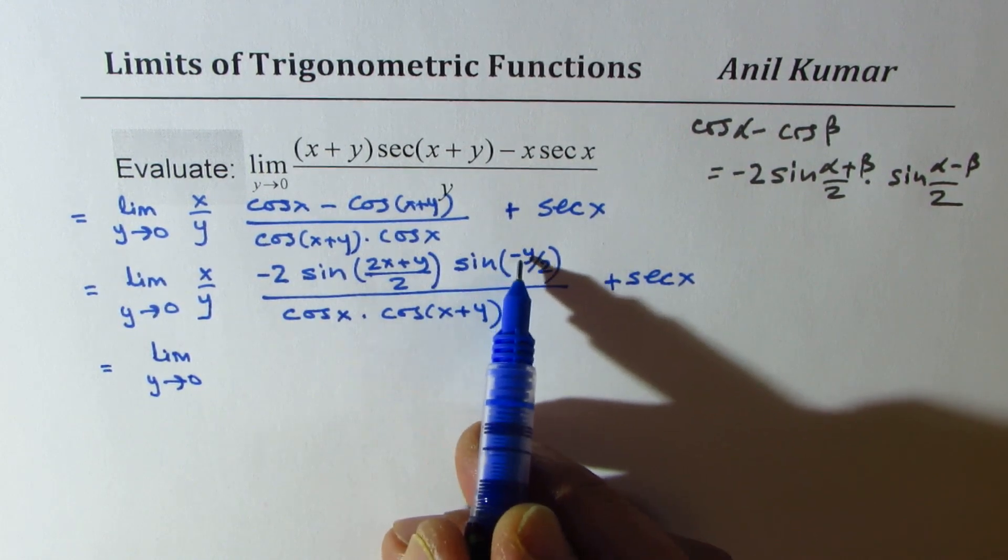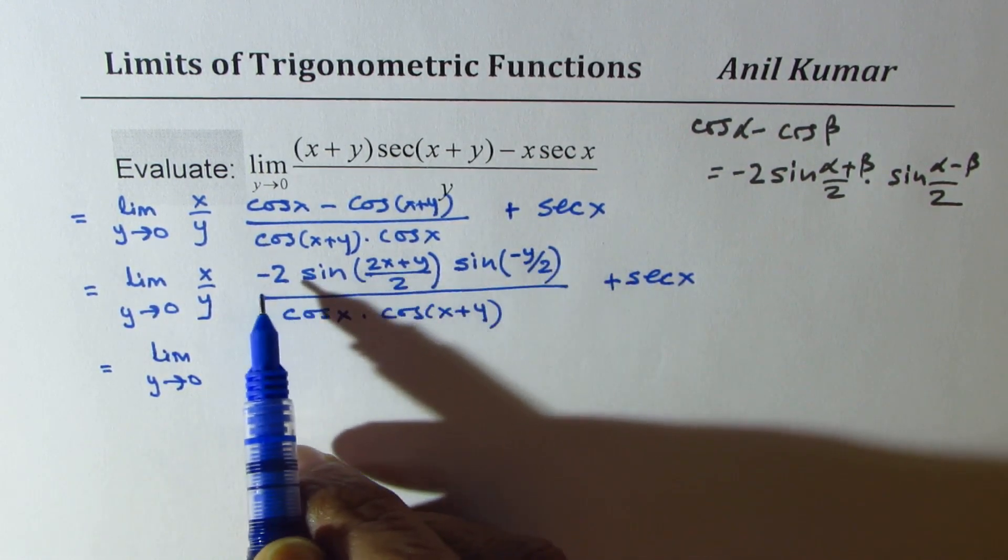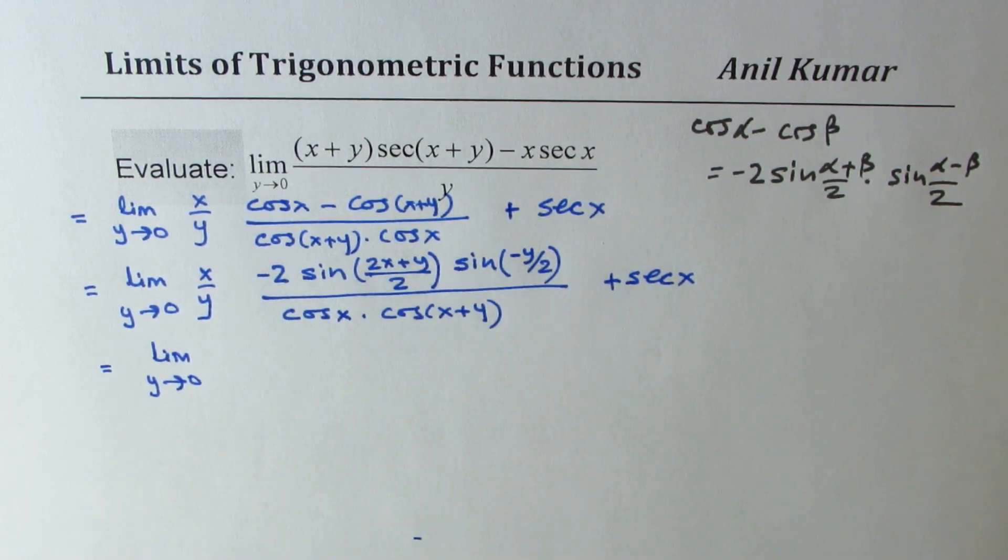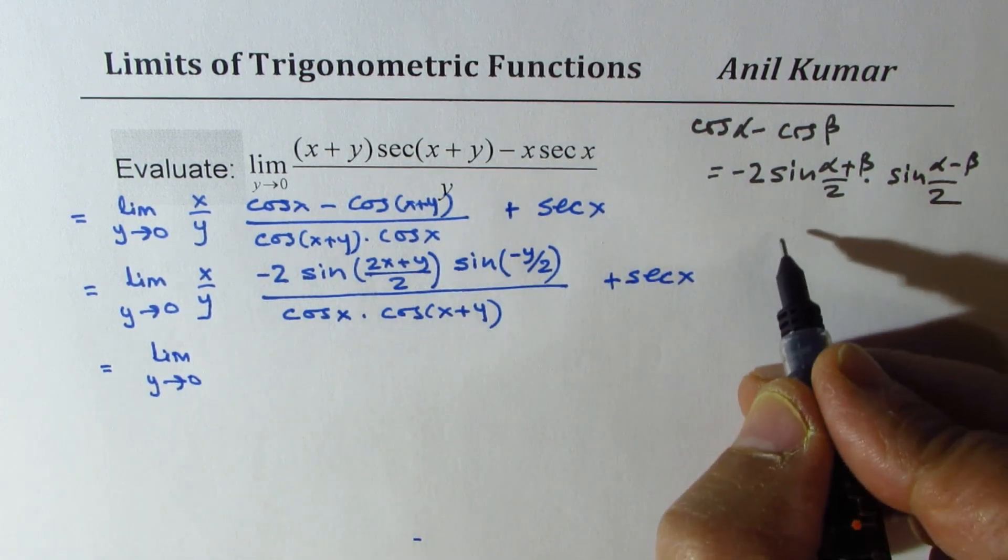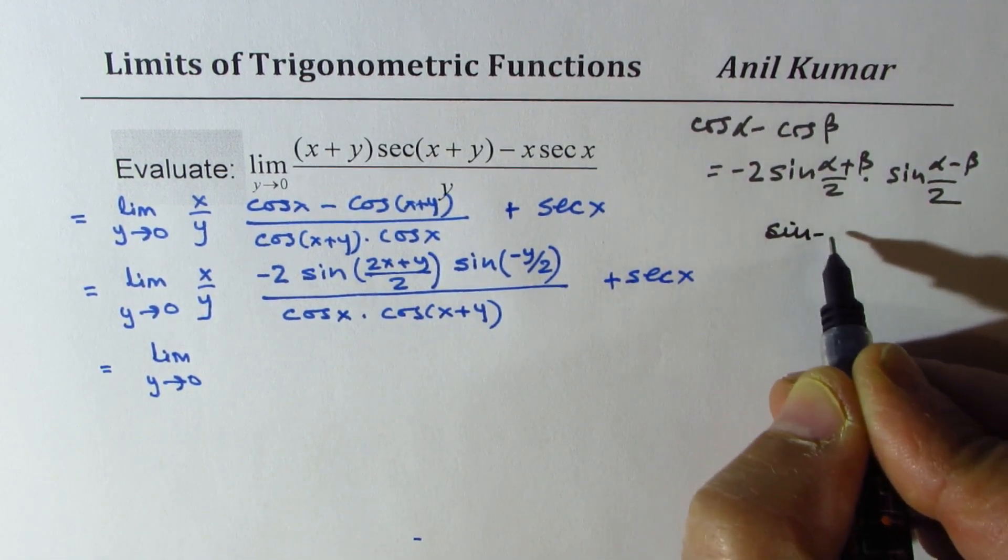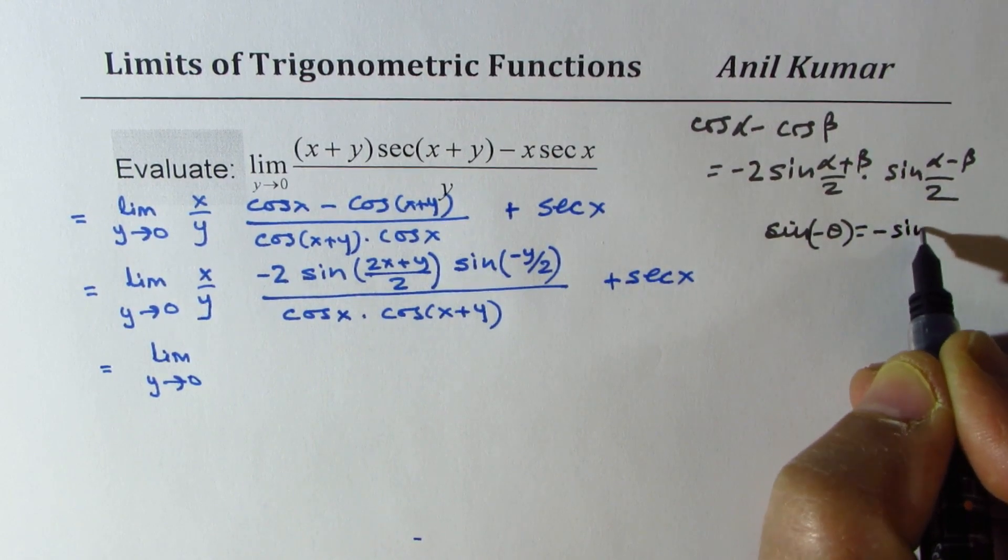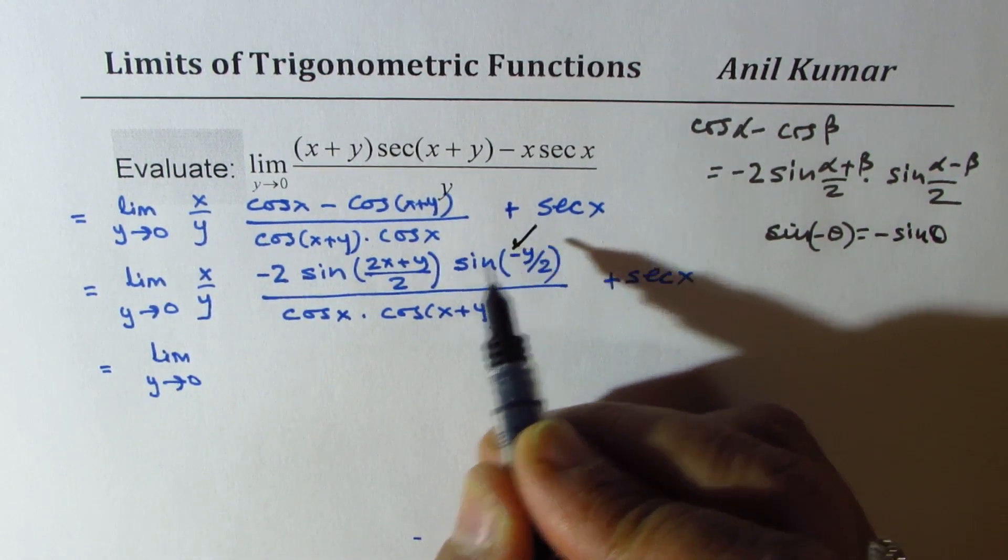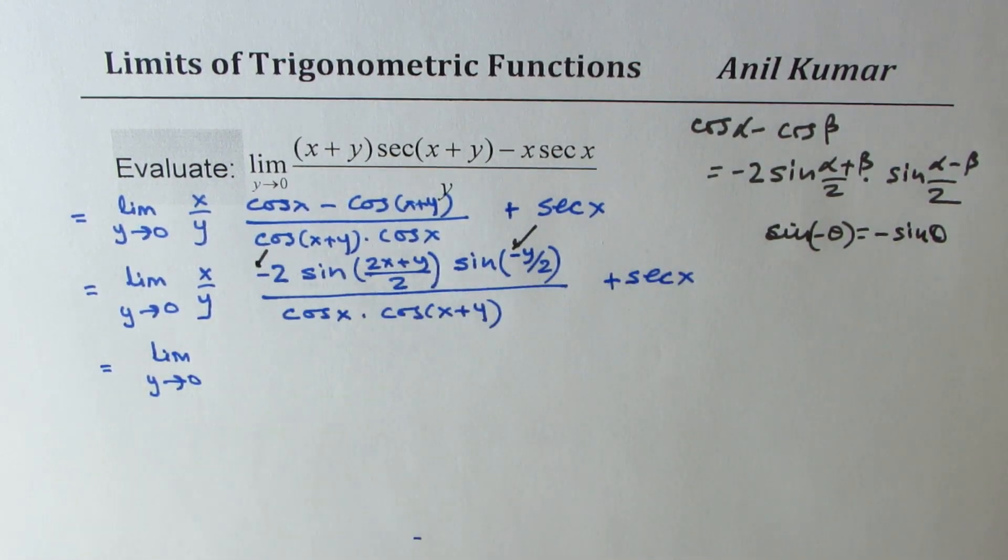Now minus of sin minus x is equals to negative. So what we are going to use now is that sin minus theta is basically minus sin theta. So that means these two signs will become positive.